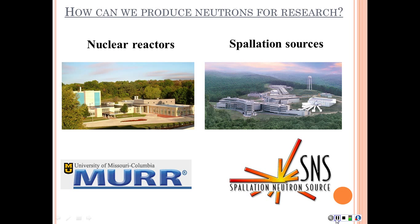On the left is an image of the University of Missouri Research Reactor, which is just two miles away from here, just south of campus on Providence Road. The blue building is the containment building where the nuclear reactor is housed. On the right is an image of the Spallation Neutron Source at Oak Ridge National Laboratory in Tennessee, just north of Knoxville. They both produce neutrons in these research facilities but do it in different ways.